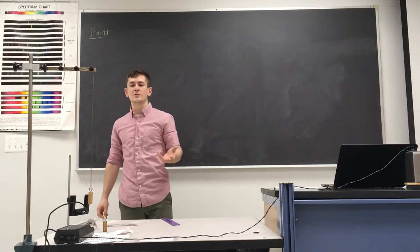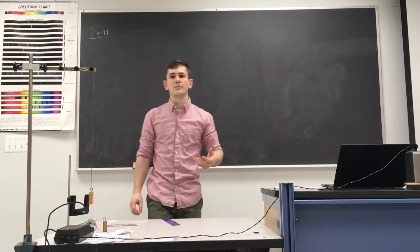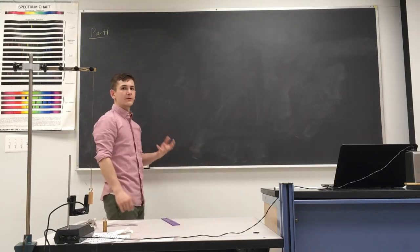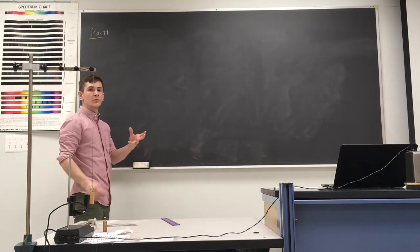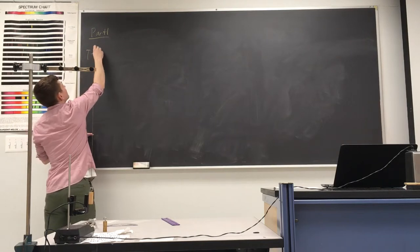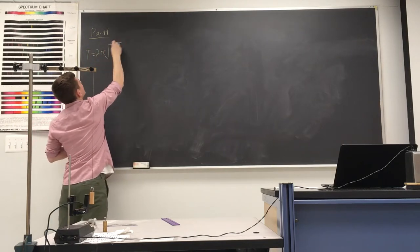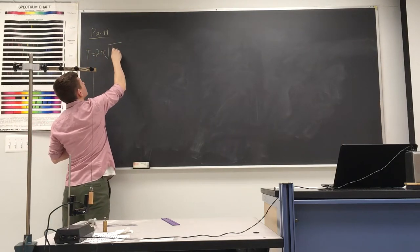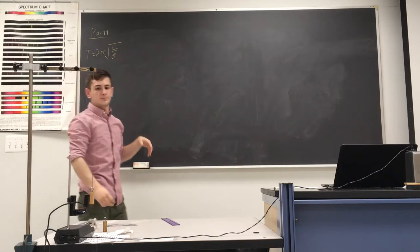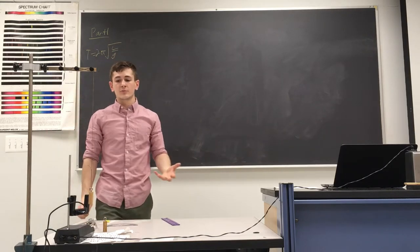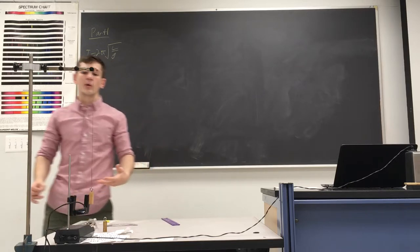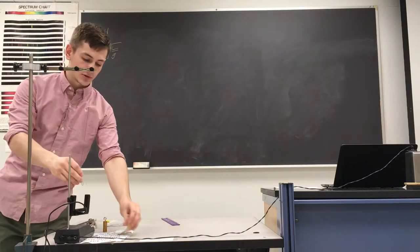Hello everyone. This week's lab is going to be the pendulum lab. We know that for a pendulum with a small angle and a simple pendulum, the period equals two pi times the square root of L over G, where L is the length of the pendulum. For our first part, we want to analyze if that equation actually works and how accurate it is.